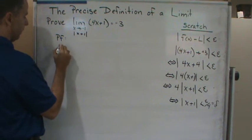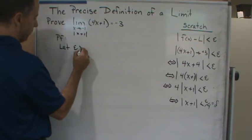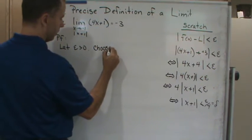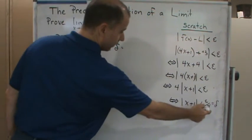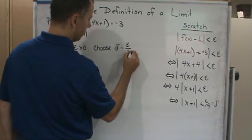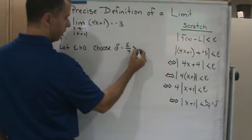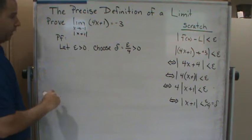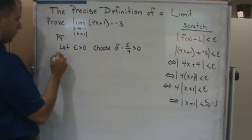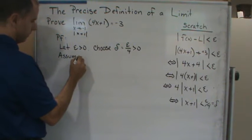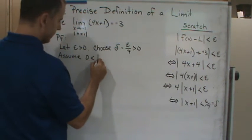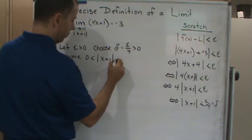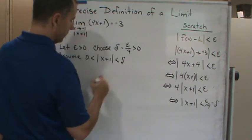So first of all, let epsilon be greater than 0. Choose delta equal to epsilon over 4, which is greater than 0 because epsilon is greater than 0. Now assume 0 is less than the absolute value of x plus 1, which is less than delta.